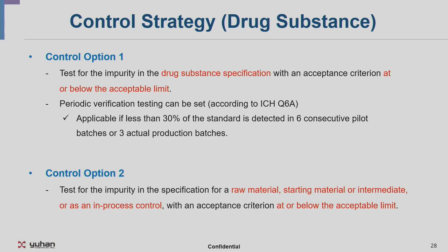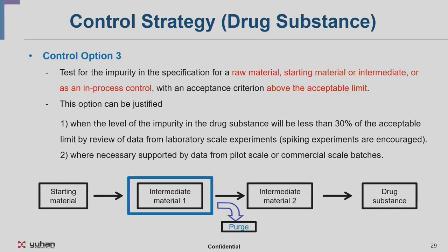Control option 1 is testing the impurity in the drug substance specification with an acceptance criterion at or below the acceptable limit. According to ICH Q6A, a periodic verification test can be set — applicable if less than 30% of the standard is detected in six consecutive pilot batches or three actual production batches. Control option 2 is testing the impurity in the specification for raw material, starting material, or intermediate, or as an in-process control, with an acceptance criterion at or below the acceptable limit.